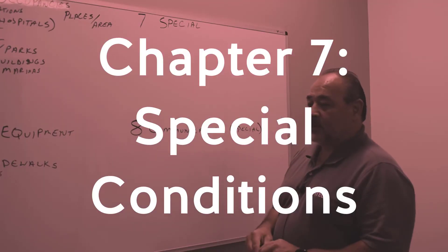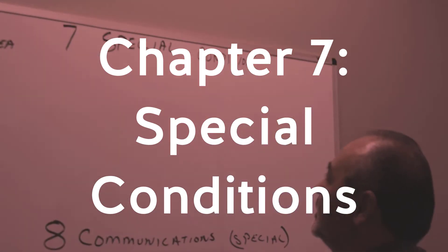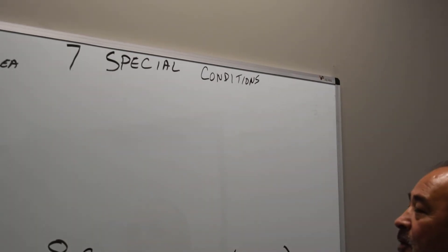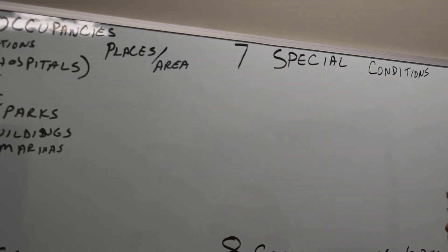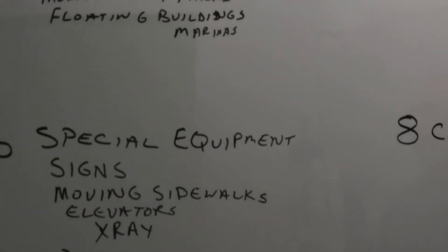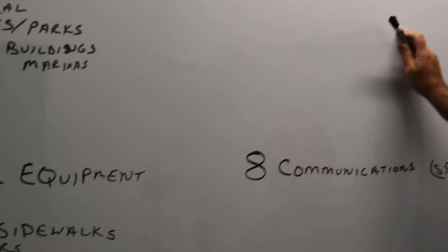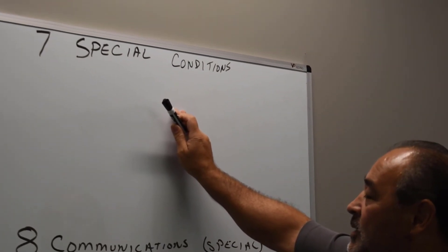Chapter seven is special, but it's special conditions. With that, I want you to understand this. We could be in a special occupancy, which is a place or area. We could be using some special equipment that's in chapter six, but we're talking about a condition about the equipment or about the area. So special conditions in chapter seven.